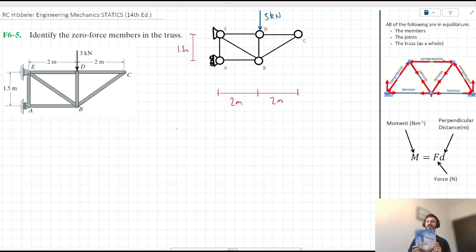Okay, so hello and welcome to this video tutorial for RZ Hippler's Engineering Mechanics Statics textbook. We have this problem from chapter 6, which is a very simple problem. It's asking us to identify the zero force members in the truss that we have here. Let's get started with the problem then.